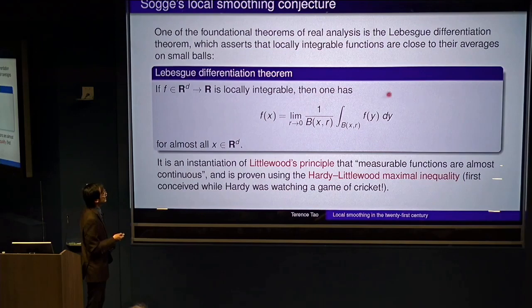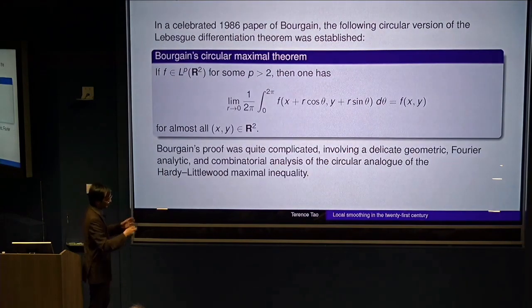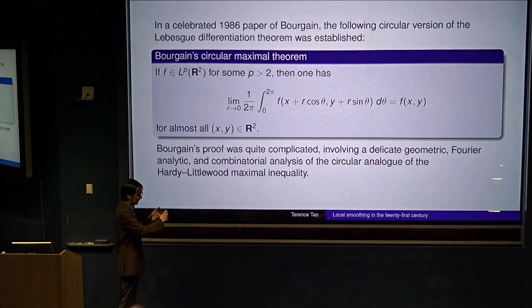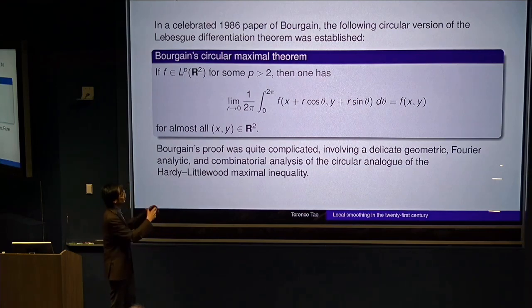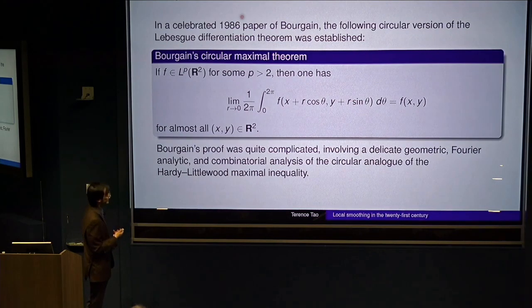But in order for this theorem to work, you had to average over these balls. And there was this longstanding question, what happens if you average in different ways? And so people were studying what happened. Can you approximate function by its average, say, over circles rather than balls? And this you can also do.